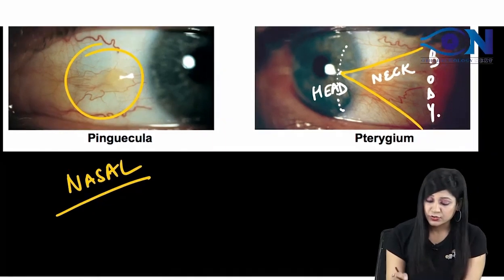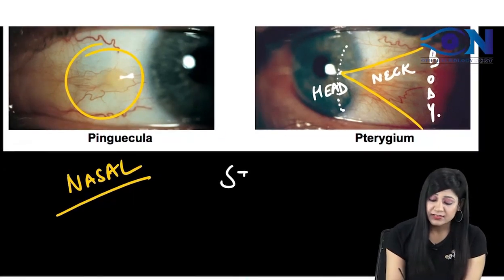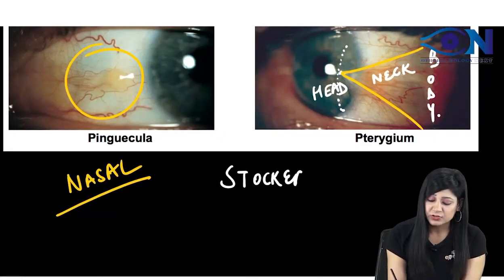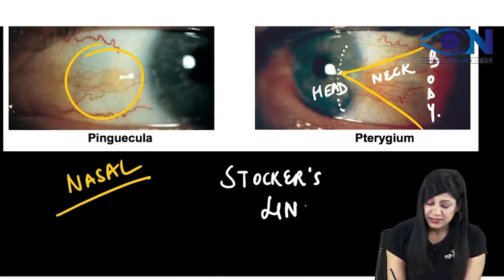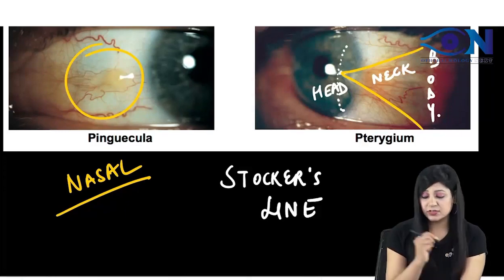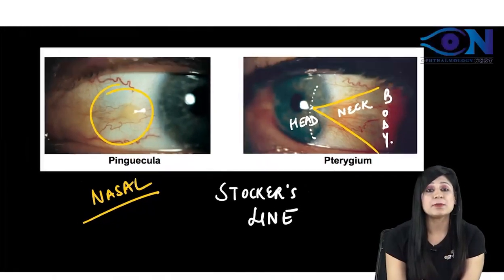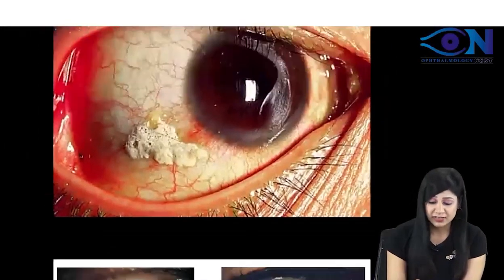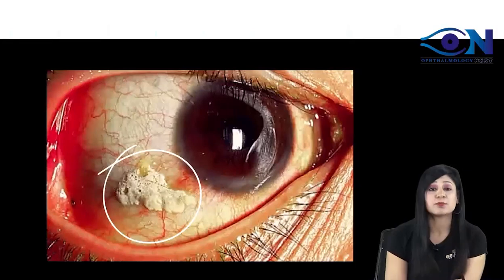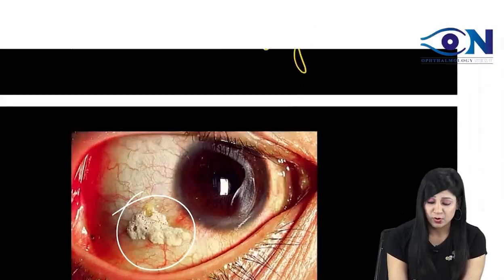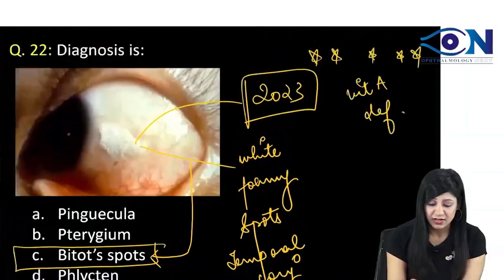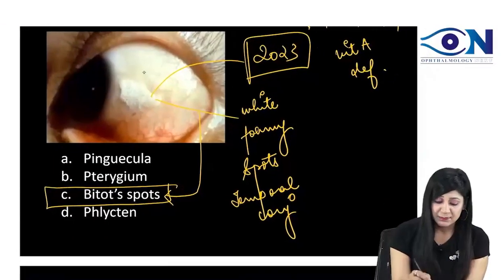What is that called? That is called Stocker's line. So it is not pinguecula or pterygium. You can see these are white foamy spots present in the temporal conjunctiva, which are similar to this image.